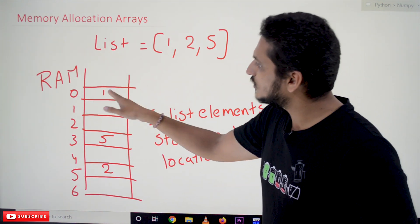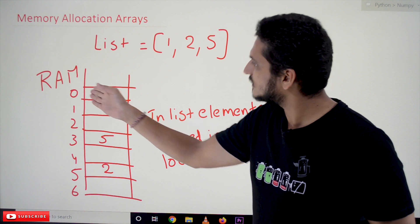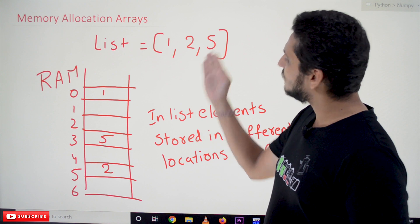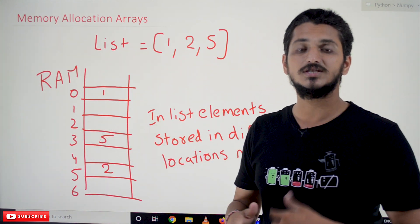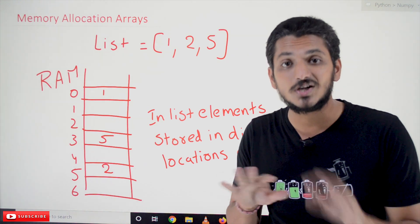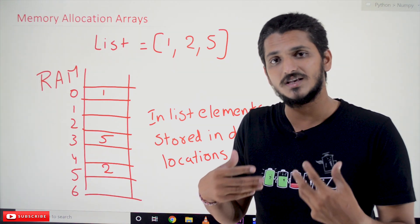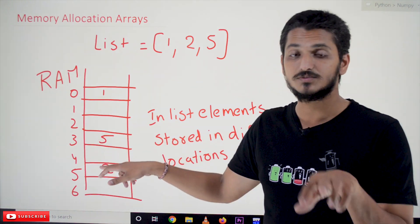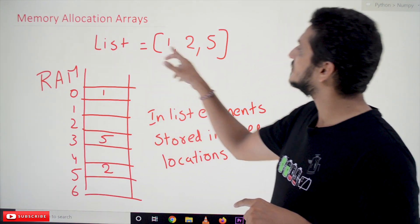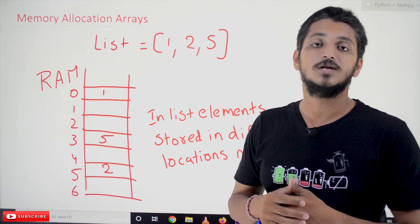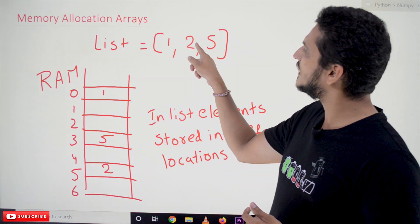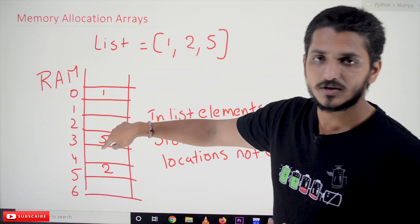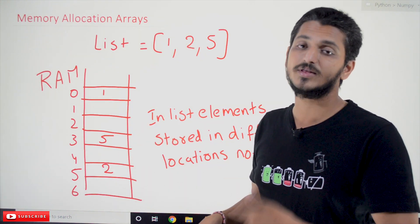Each memory location is 1 byte. So if you want to save integer 1, it is given one address location. Integer 2 is given address location 5, and integer 5 is given address location 3. This is how list elements are saved — they are not continuous. Wherever space is available, the elements are saved, and their references, meaning memory addresses, are saved in the list. To access the elements, first you go to the list, find the reference value, then go to that memory location and access the element.